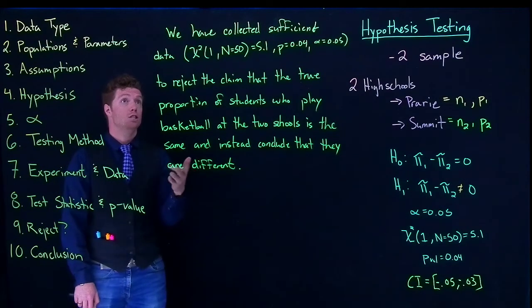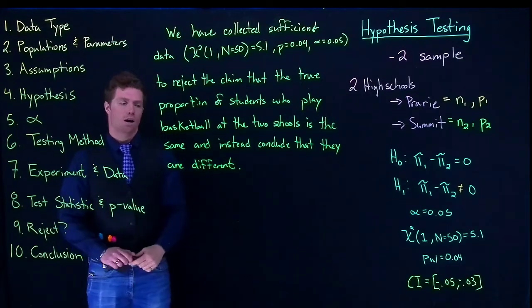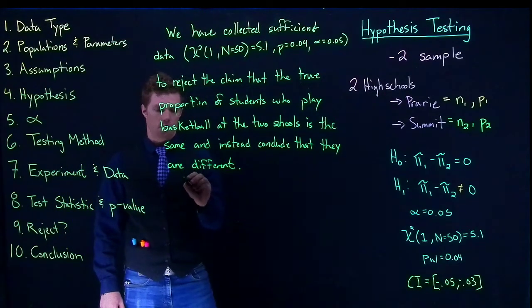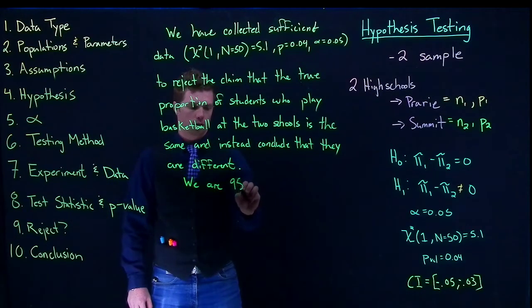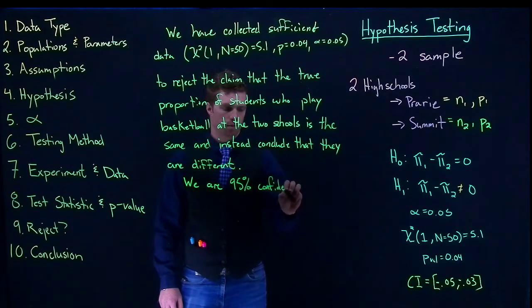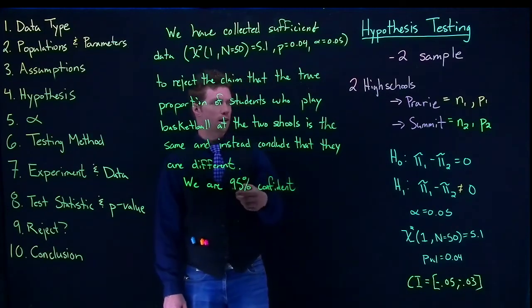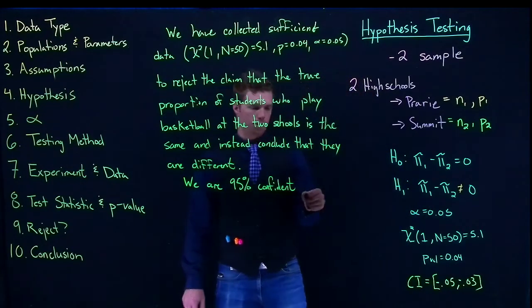Now, if we have sufficient data, we need to also remember to still include the confidence interval. So we can go down here and say that we are 95% confident. Now remember, it's not always 95%, it's 95% because our alpha is 5%.